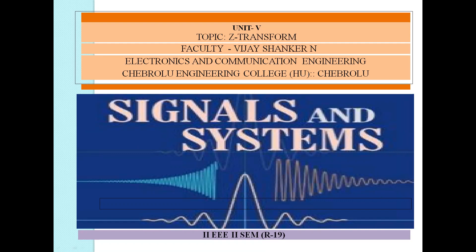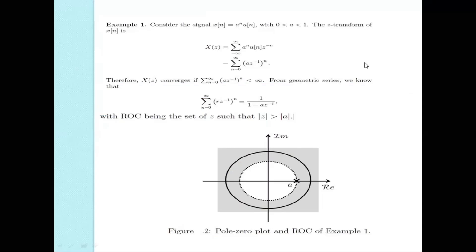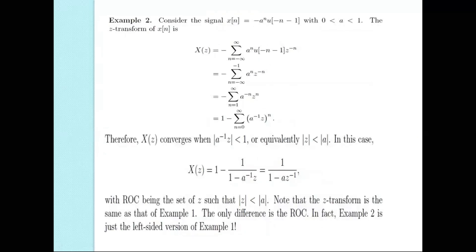The second example is very important. For both functions, the Z-transformation is the same: 1/(1 - az⁻¹). The difference is the region of convergence. For the first example, the ROC is outside the unit circle, and for the second example, the ROC is inside the unit circle.